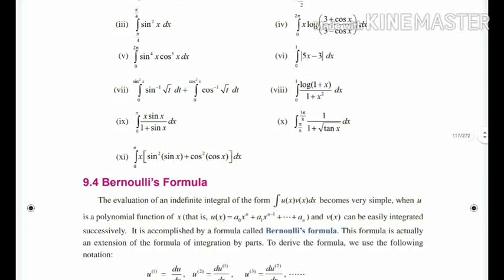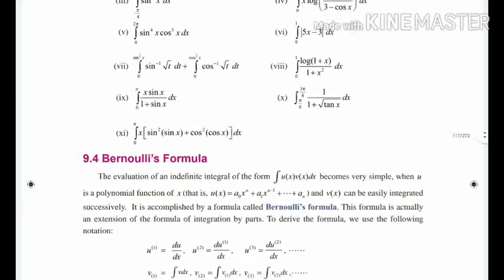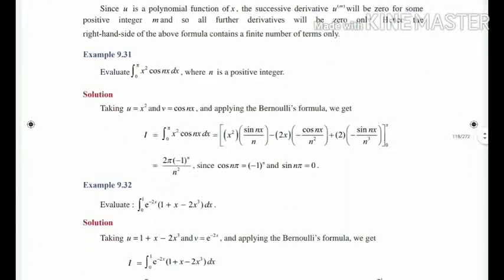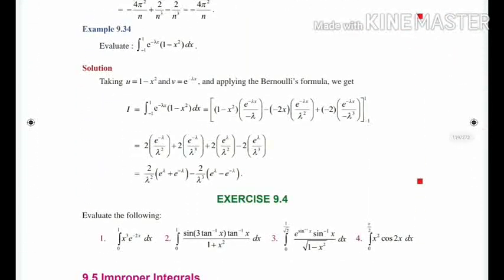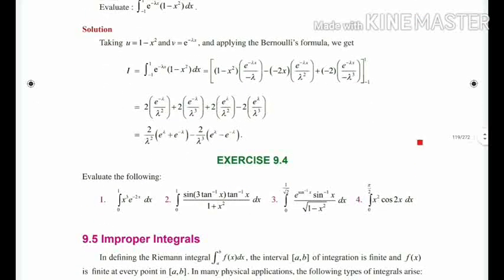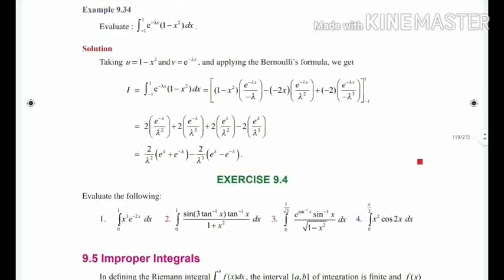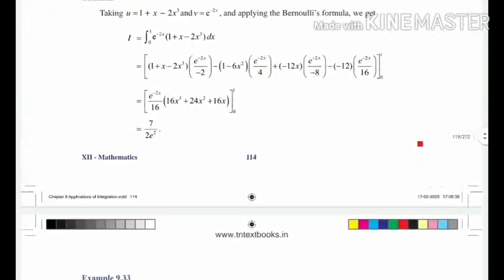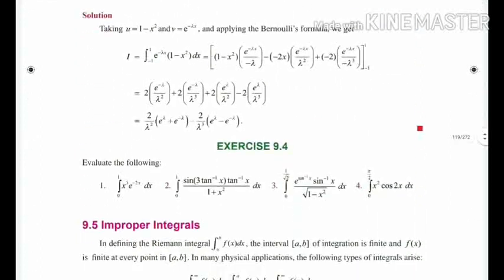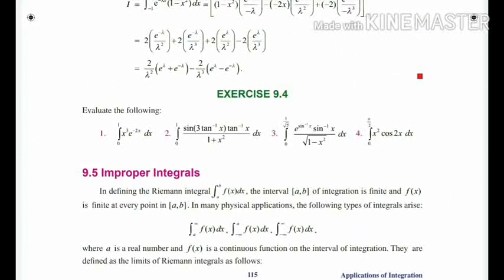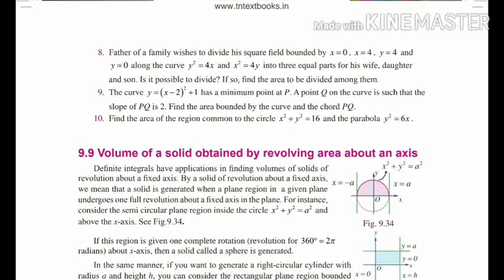Section 9.4 — Bernoulli's Formula — is deleted from your portion. All examples based on it are deleted: Example 9.31 deleted, 9.32 deleted, 9.33 deleted, and 9.34 is deleted. Exercise 9.4 is fully deleted. To repeat: Examples 9.31, 9.32, 9.33, 9.34 are deleted, and Exercise 9.4 is deleted.